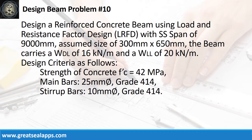Design a reinforced concrete beam using load and resistance factor design with a simply supported span of 9000mm. Assume a size of 300mm by 650mm. The beam carries a uniform dead load of 16 kN/m and a uniform live load of 20 kN/m. Design criteria: concrete strength 42 MPa, main bars 25mm at grade 414, stirrup bars 10mm at grade 414.